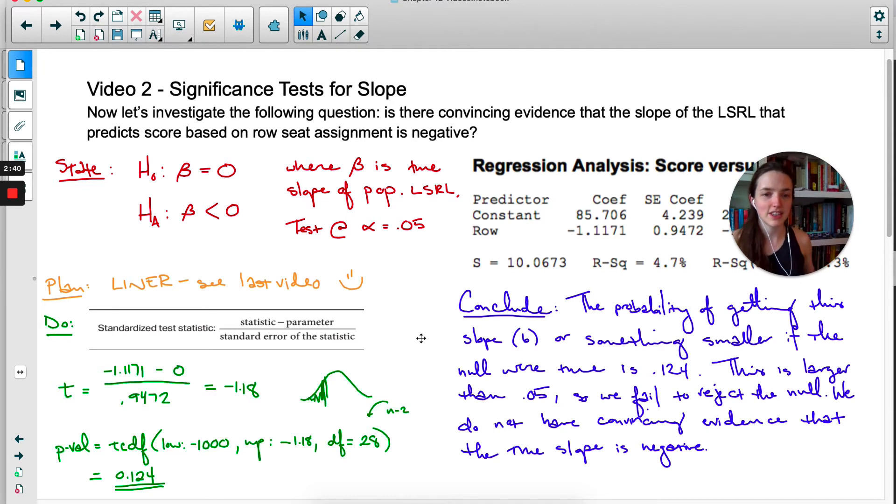The probability of getting this slope or something smaller, if the null were true, is 0.124. That's larger than 0.05. So we fail to reject the null. We do not have convincing evidence that the true slope is negative.